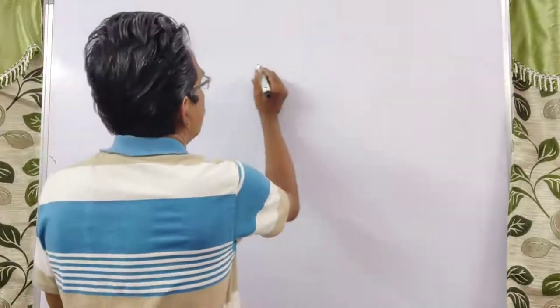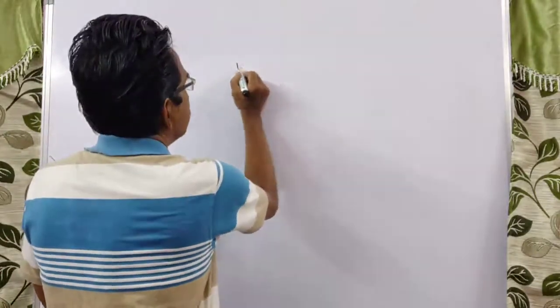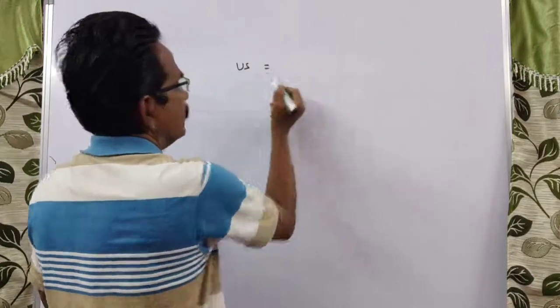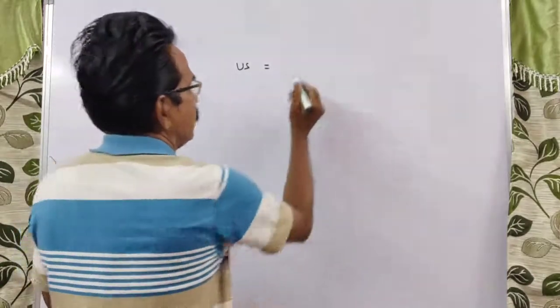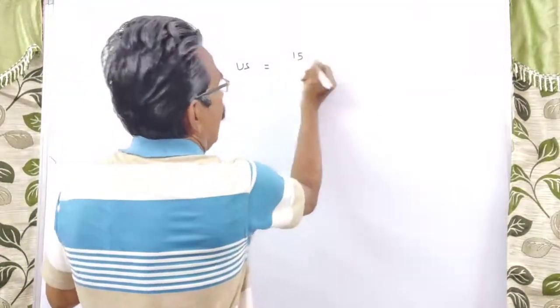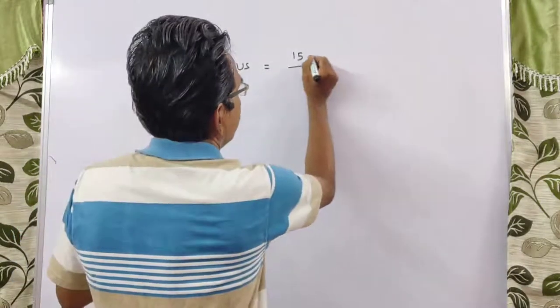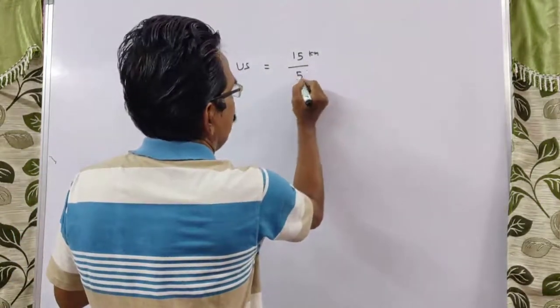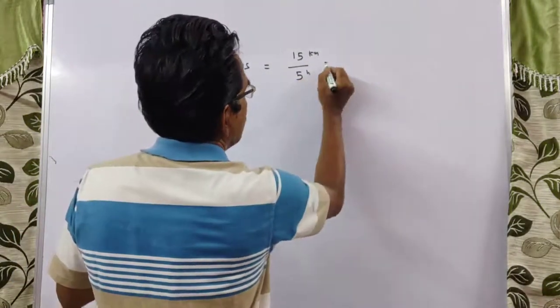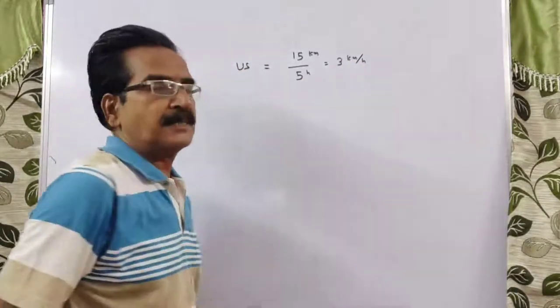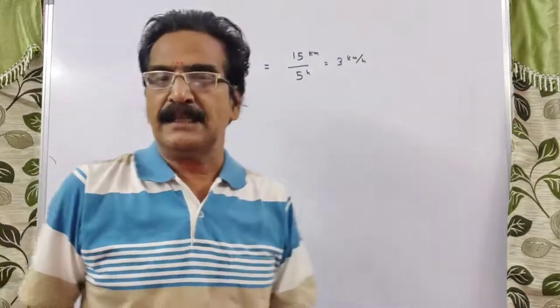Here, 15 kilometers upstream. Upstream velocity is equal to 15 kilometers in 5 hours, that is equal to 3 kmph. Upstream velocity is 3 kmph.